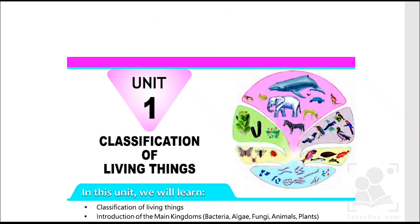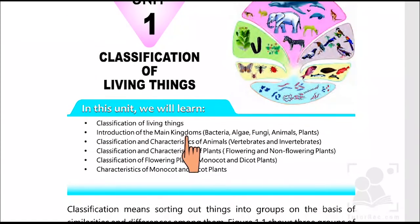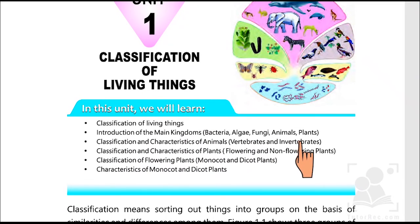This was from classification of living things. We have covered living things, the main kingdoms, and characteristics of animals — those are vertebrates and invertebrates. This is quite a basic but very important topic. I hope you have enjoyed and understood the topic. I'll be back with some more. Till then, take care of yourselves. Bye.